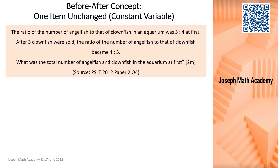Let's begin. The ratio of the number of angelfish to that of clownfish in an aquarium was 5 to 4. I'm going to do a simple annotation: angelfish to clownfish, 5 to 4.